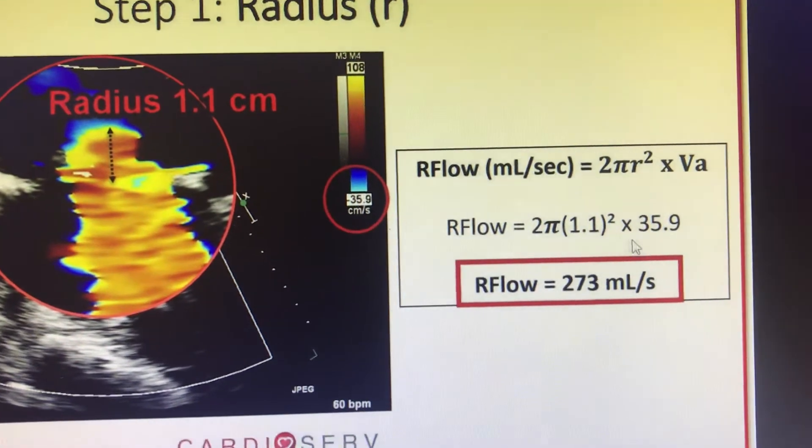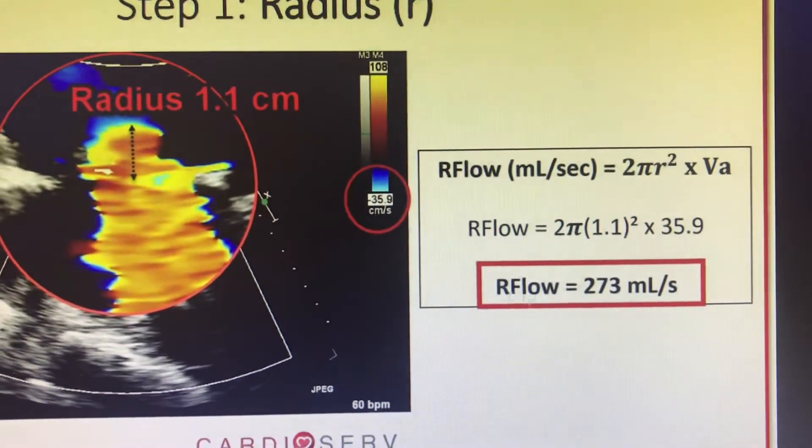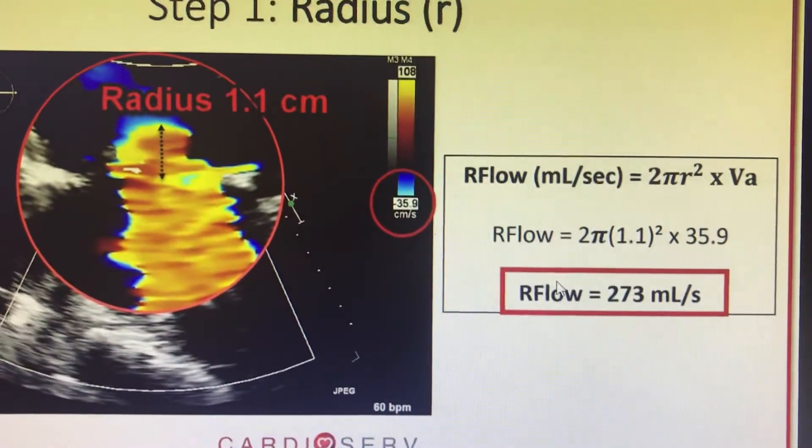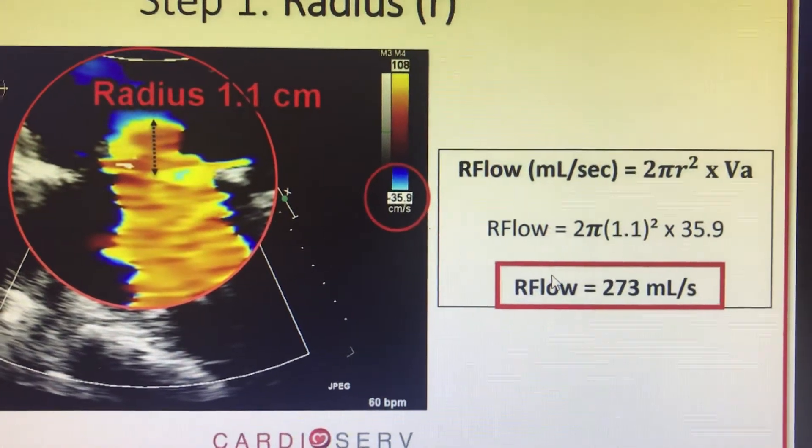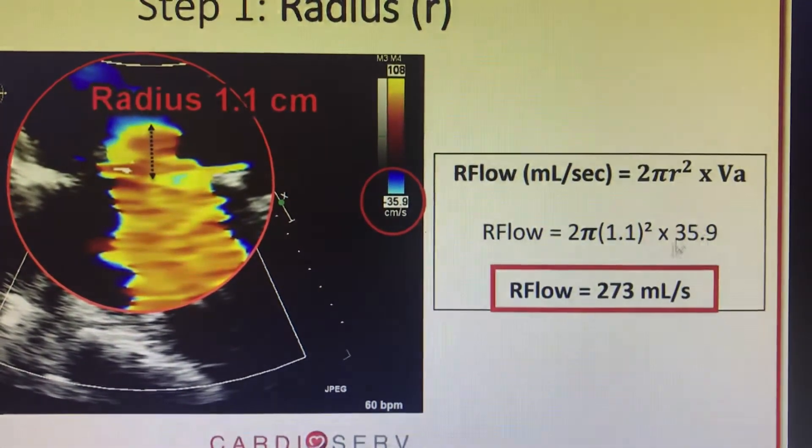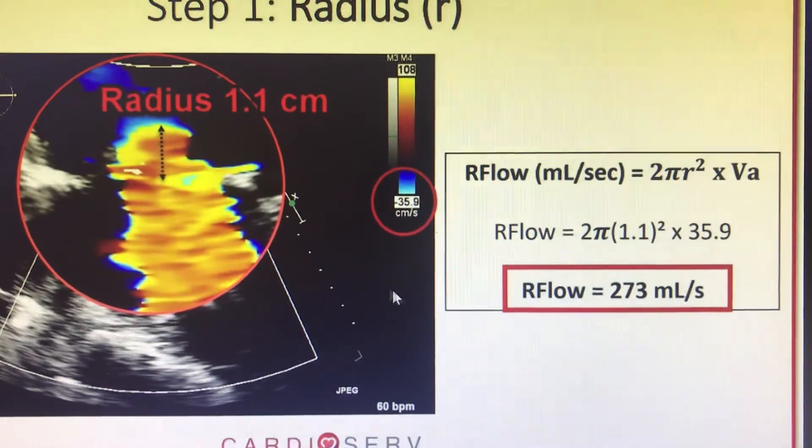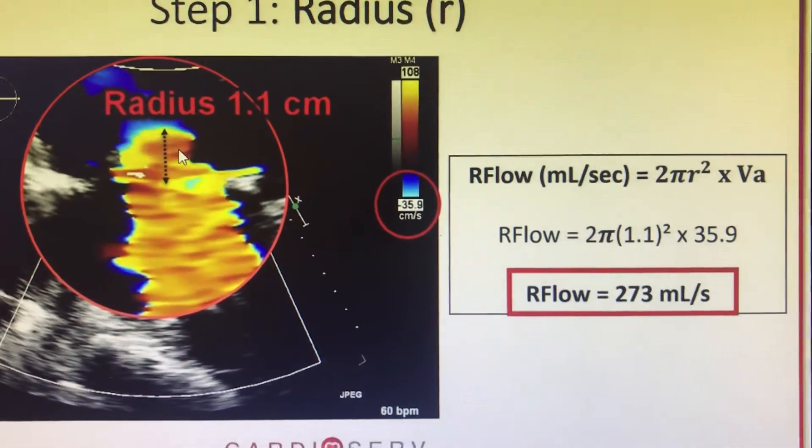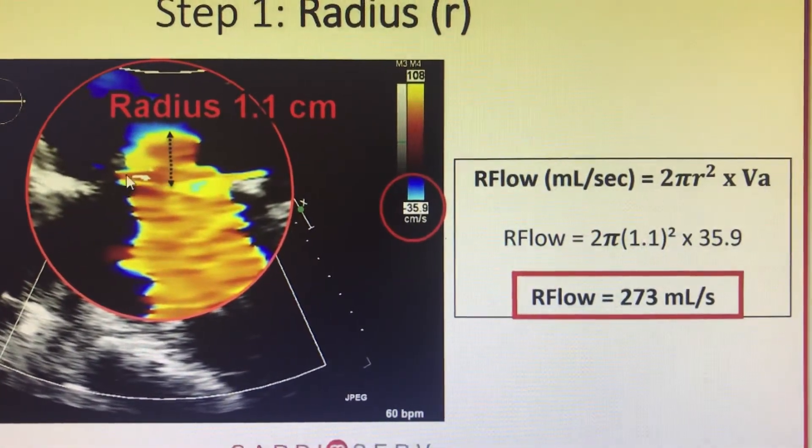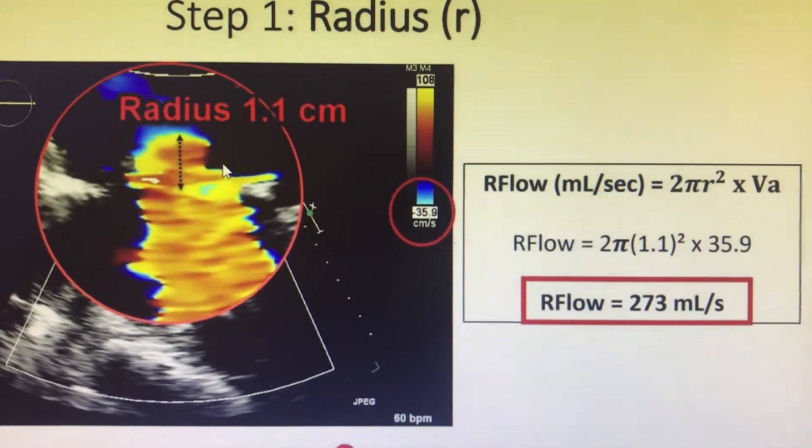Regurgitation flow times aliasing velocity, the radius times aliasing velocity will give you the regurgitation flow. Regurgitation flow will be dependent on the radius of the aliasing, the radius of the convergence zone which you will be calculating.